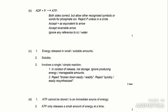Looking at the mark scheme: ADP plus Pi makes ATP — we wrote that. It says you can get the mark if both sides are correct, and they allow other recognized symbols or words for phosphate ion. However, it says reject P unless in a circle, because if you just wrote P without a circle that would denote phosphorus instead of phosphate, and you won't get any marks. It also says they accept equals as equivalent to an arrow, and they accept a reversible arrow, though I'd recommend using a single arrow.